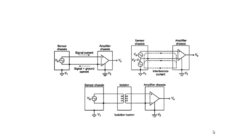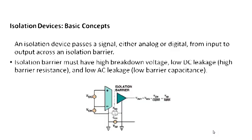To avoid interference currents, high impedance must be introduced. This is achieved by using isolation. With isolation, there is no direct flow of current — a high resistance path is created between the measurement signal and the signal source. This eliminates ground loops and improves measurement accuracy.